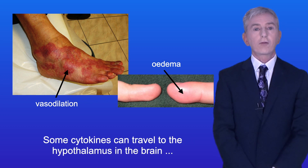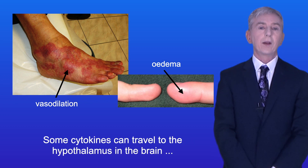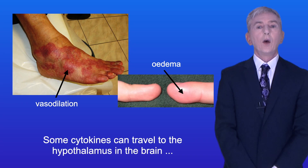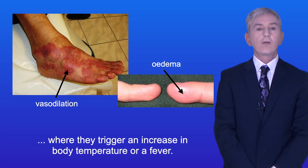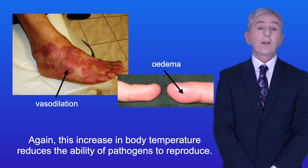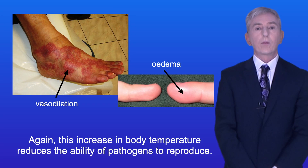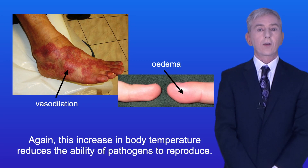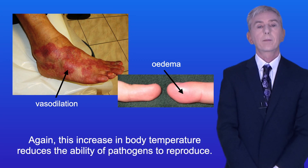Some cytokines can travel to the hypothalamus in the brain where they trigger an increase in body temperature, or a fever. Again, this increase in body temperature reduces the ability of pathogens to reproduce.